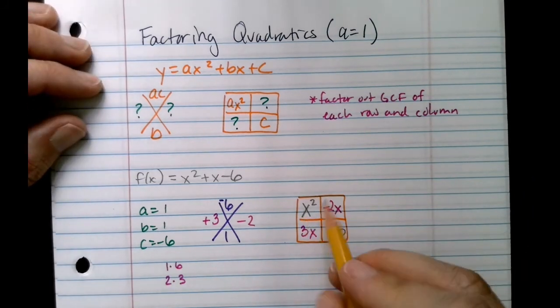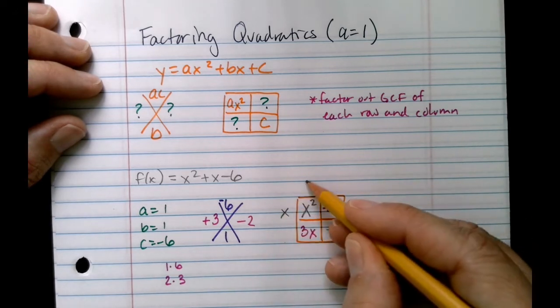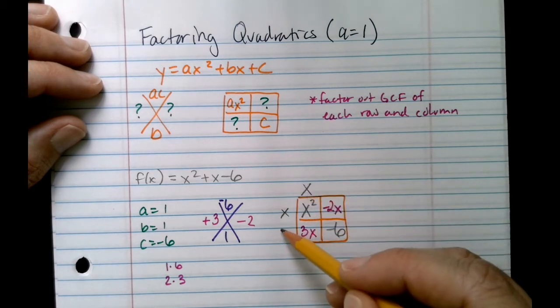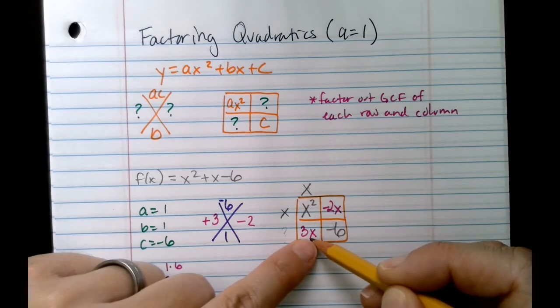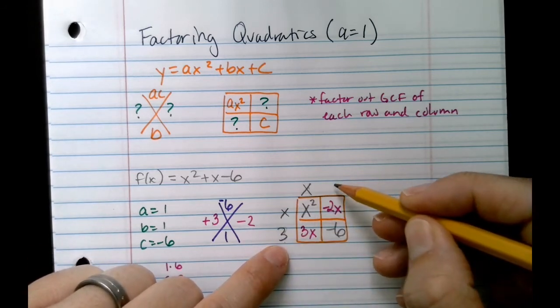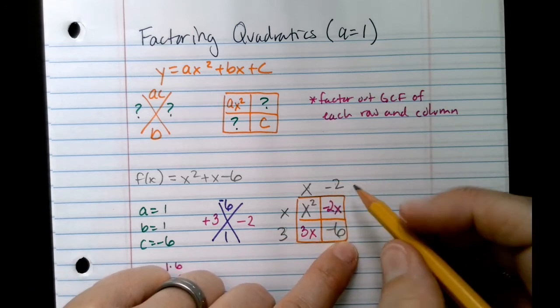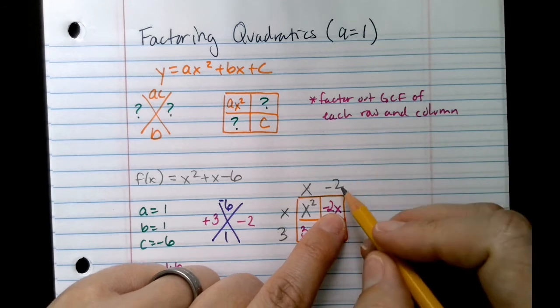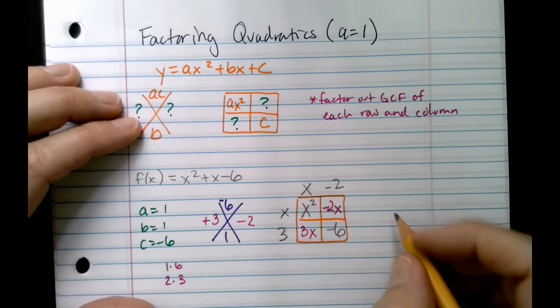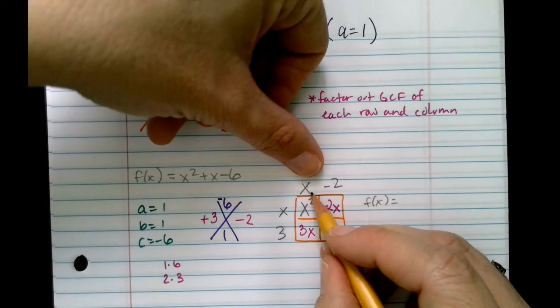So the GCF between x squared and negative 2x is x. So what number times x is x squared? x. x times what number here when I multiply by x will give me 3x? 3. Now look over here. Some number and 3, when I multiply them together, I get negative 6. The answer is negative 2. The last box that's left over is always your check. Negative 2 times x is negative 2x. So you can see f of x now factors: take what's on top, x minus 2, and on the side, x plus 3. And there it is in factored form.